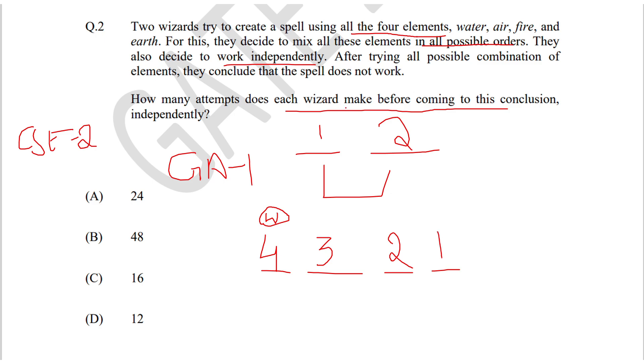The combinations are like water, air, fire, earth. You cannot write water, water because you can use it only once, not twice. So the total number of combinations that results is 4 into 3 into 2 into 1.